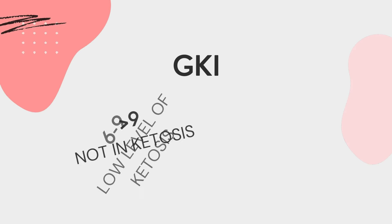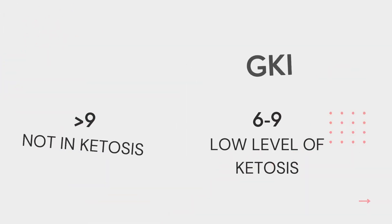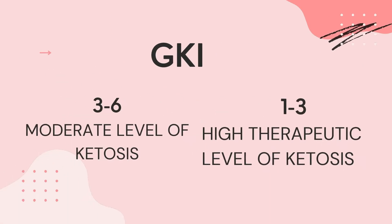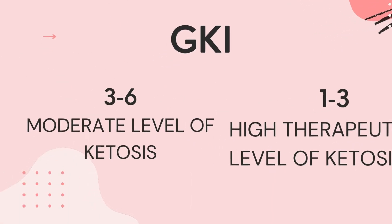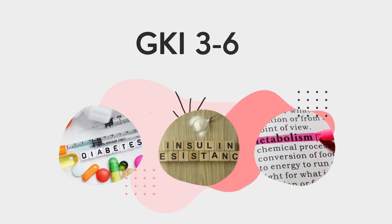If your GKI levels are over 9, then you're not really in ketosis. If your levels are between 6 and 9, then you're in a low level of ketosis, which is ideal for weight loss and health maintenance. If your GKI is between 3 and 6, you're in a moderate level of ketosis, and it's perfect for those with type 2 diabetes, obesity, insulin resistance, or metabolic and endocrine disorders.